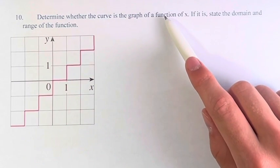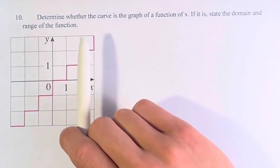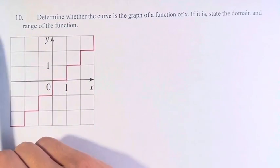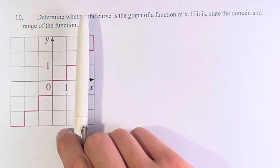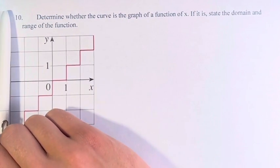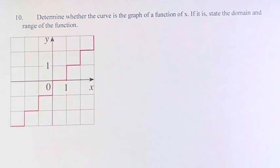So to determine whether the graph is a function of x, we're going to use the vertical line test. We're going to use this pen to represent a vertical line, and as we pass through a function, at no point can the pen be passing over more than one point on the function. This is because a function for any given x value can only have one y value.